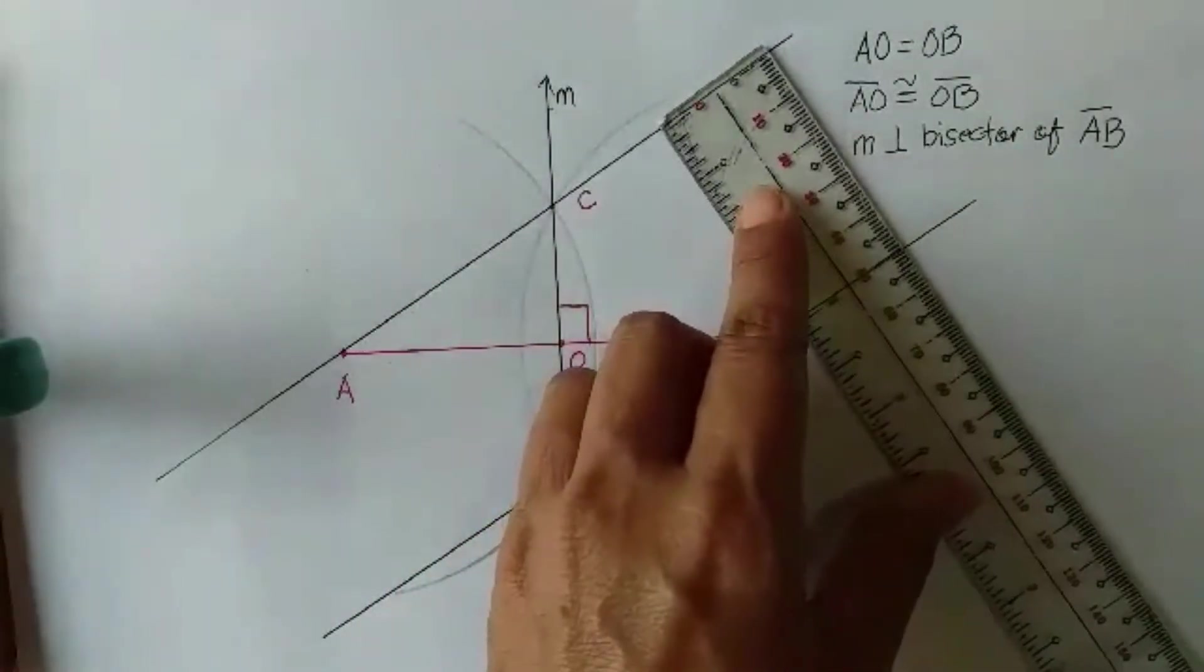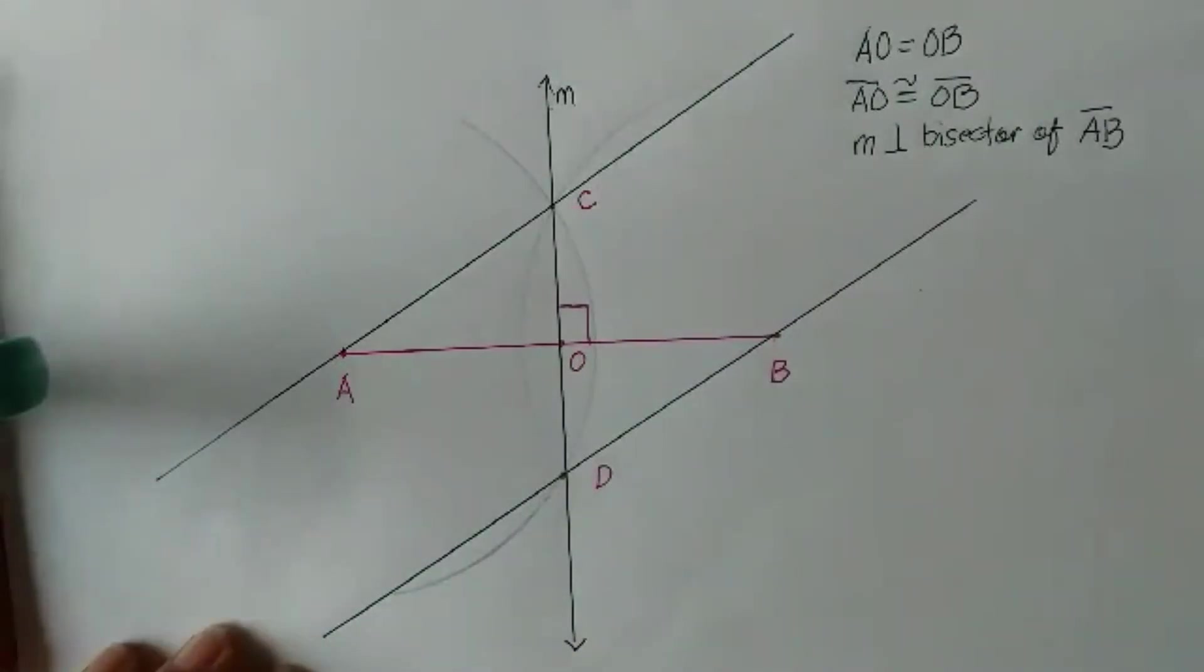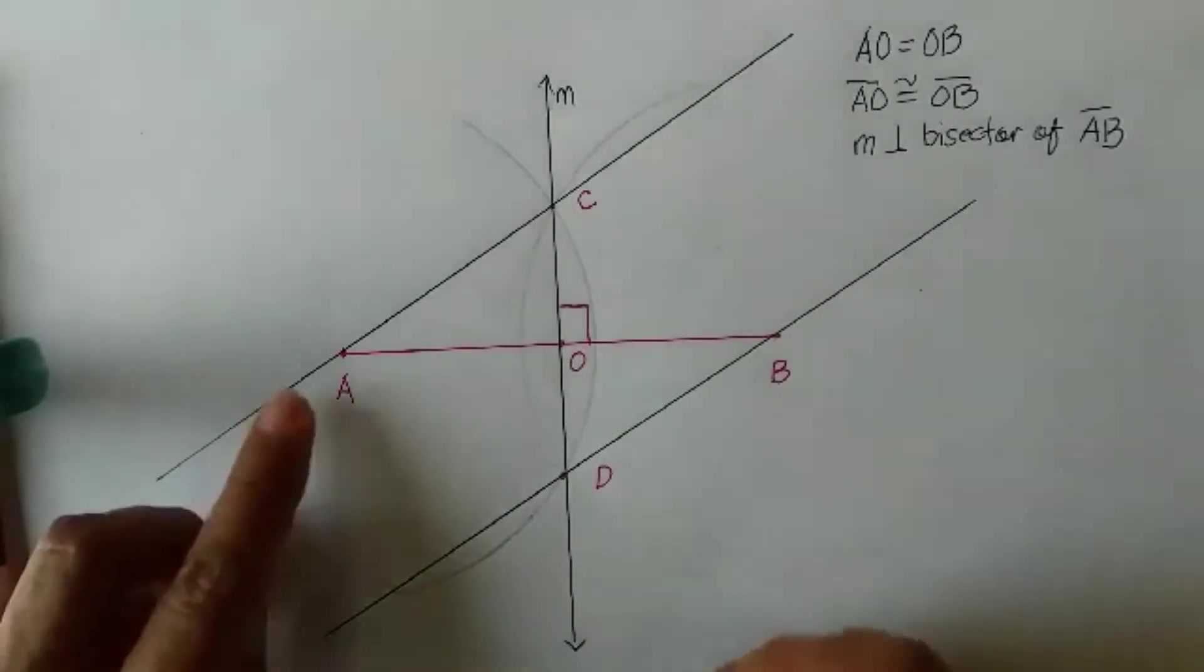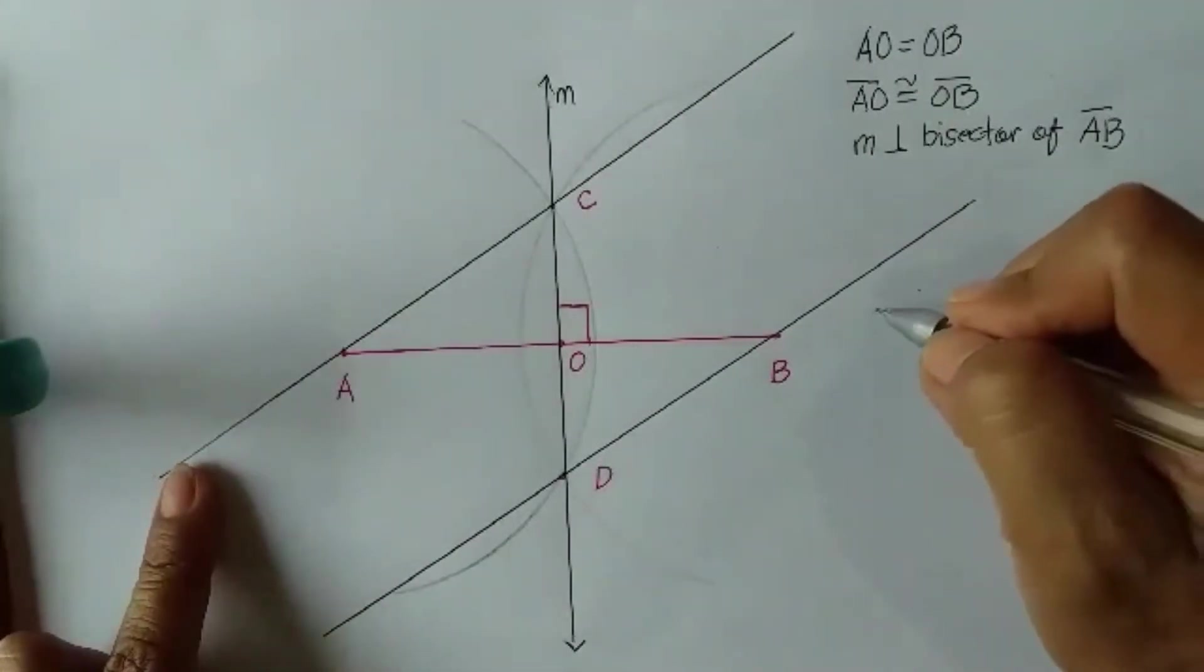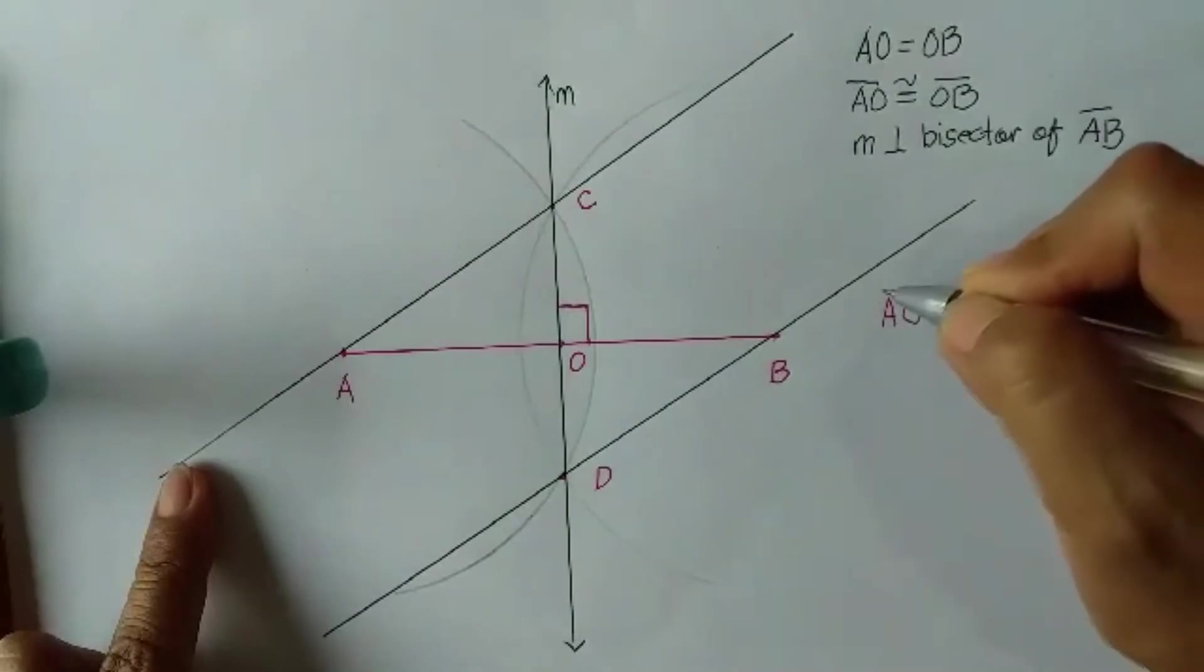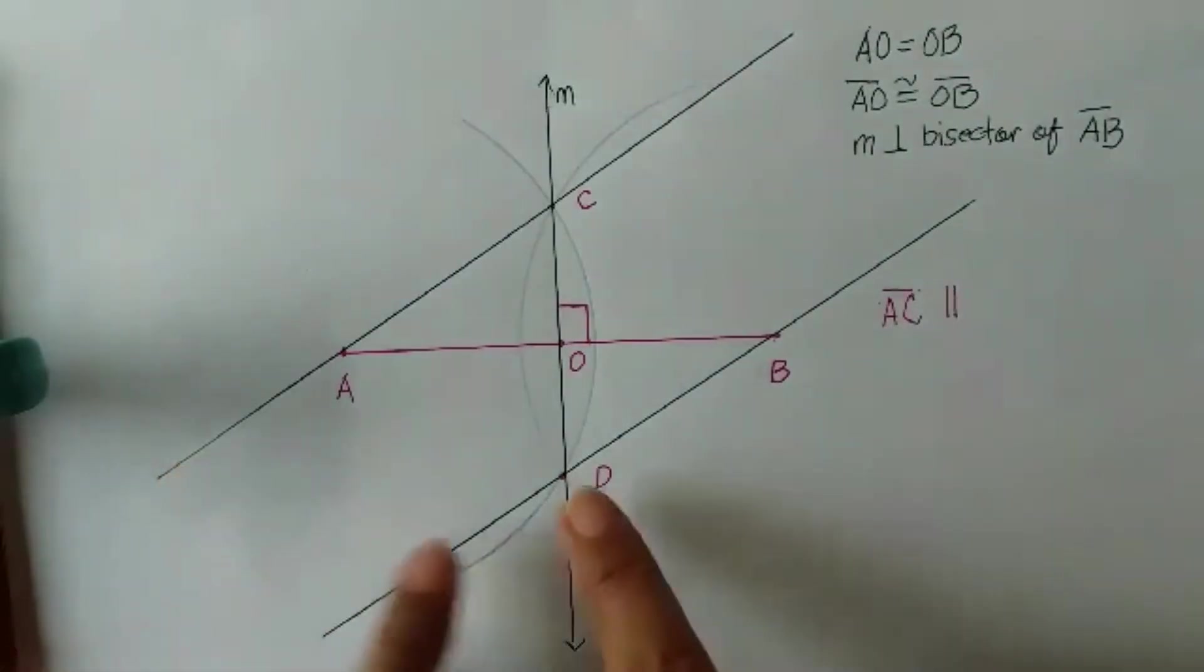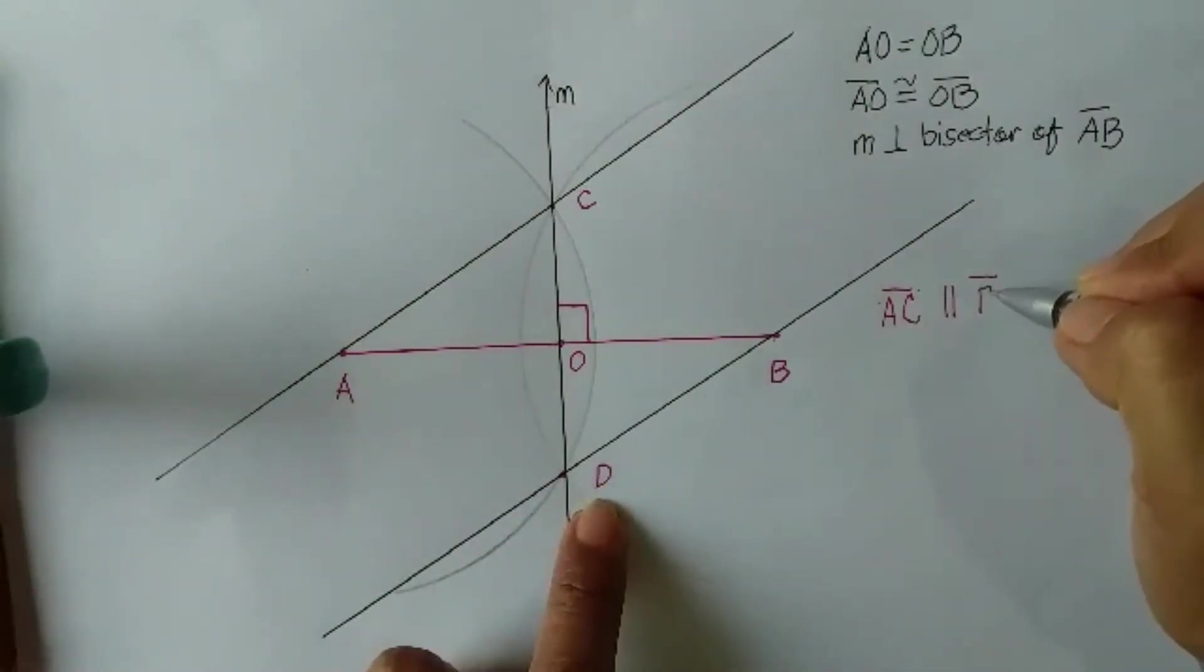As you can see from the start, the distance between line segment AC and line segment DB is at 50 millimeters. Therefore we can say now that segment AC is parallel to segment DB.